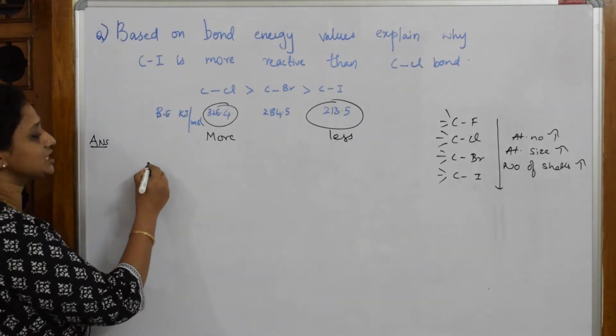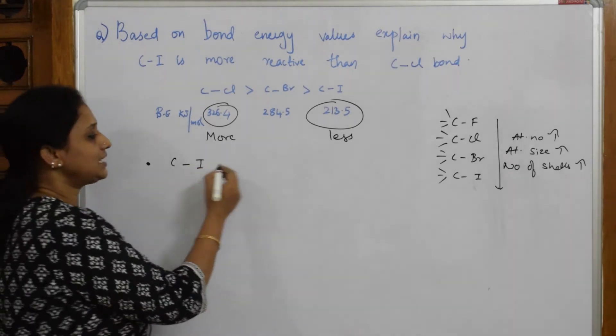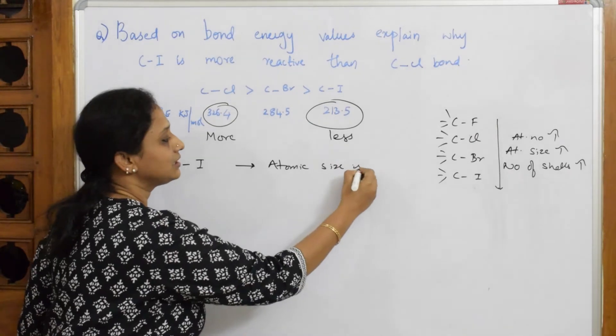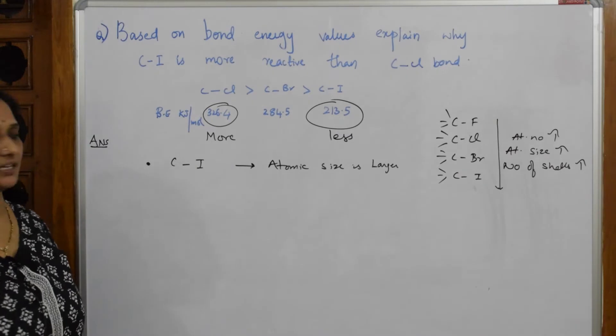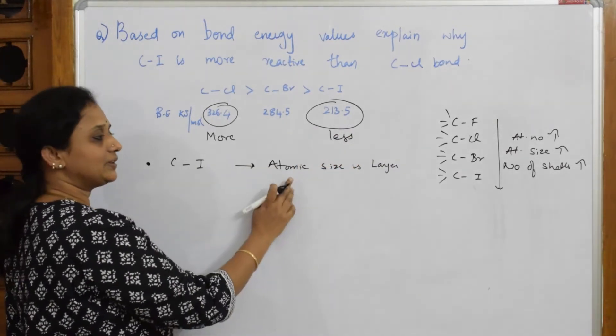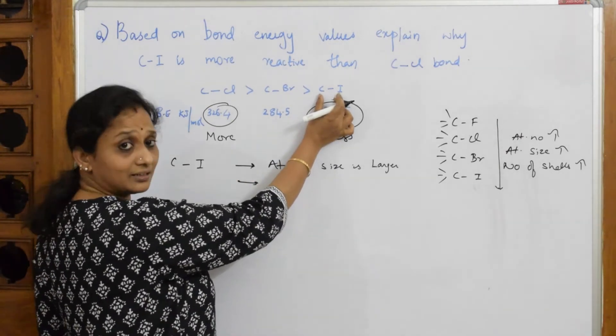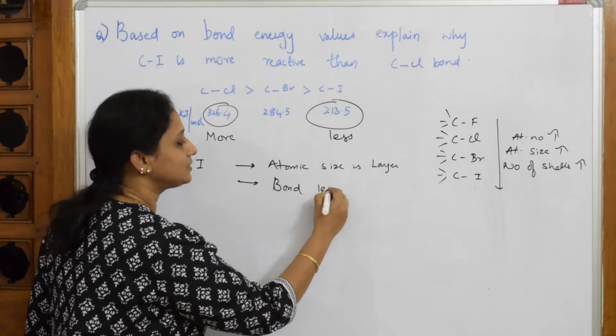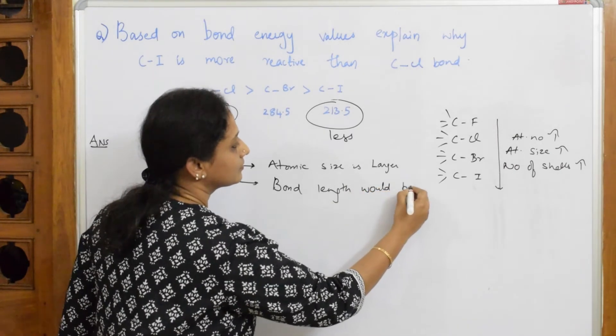In this particular case, first I'll write my answer. In CI, in case of CI, I'm going to write atomic size is larger compared to Cl. As the same thing I have written there, we'll be writing it again. When the atomic size is larger, what will happen? How is the bond here in between carbon and iodine? Automatically we know bond length would be larger.